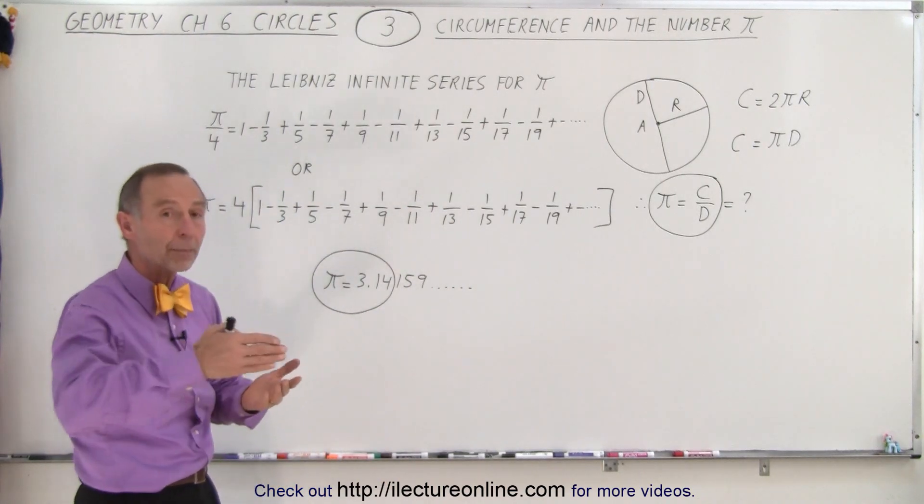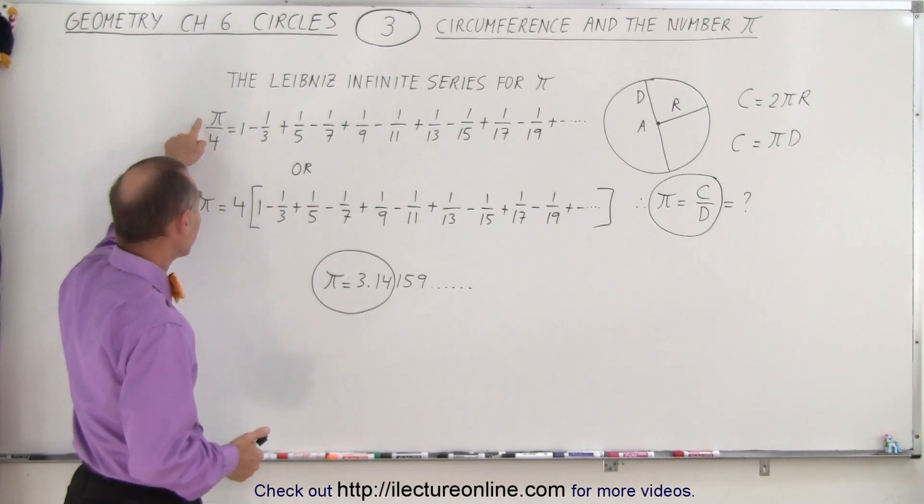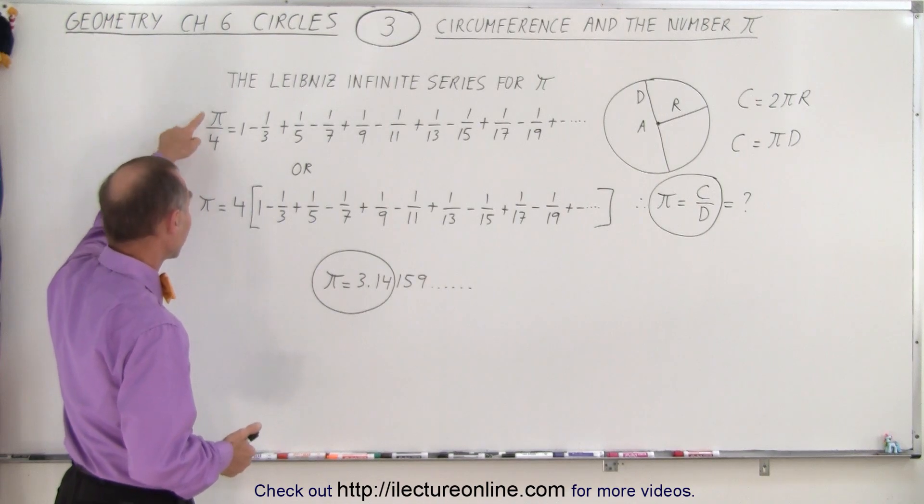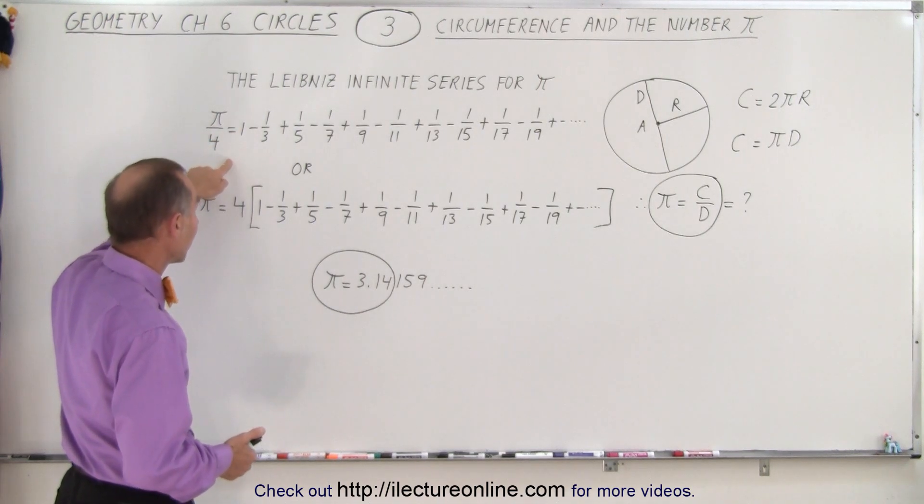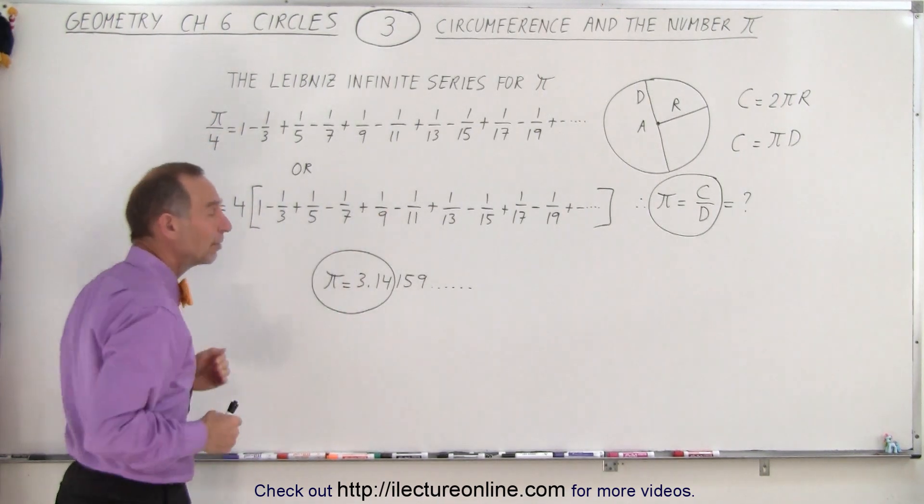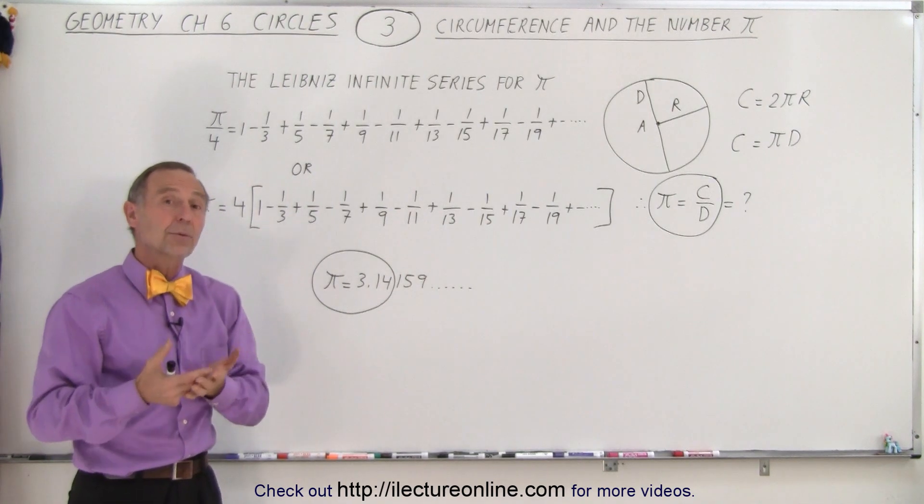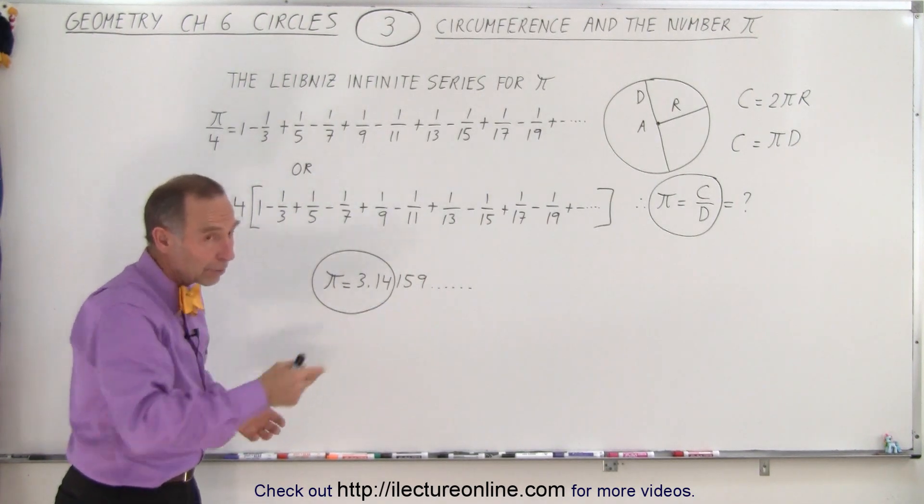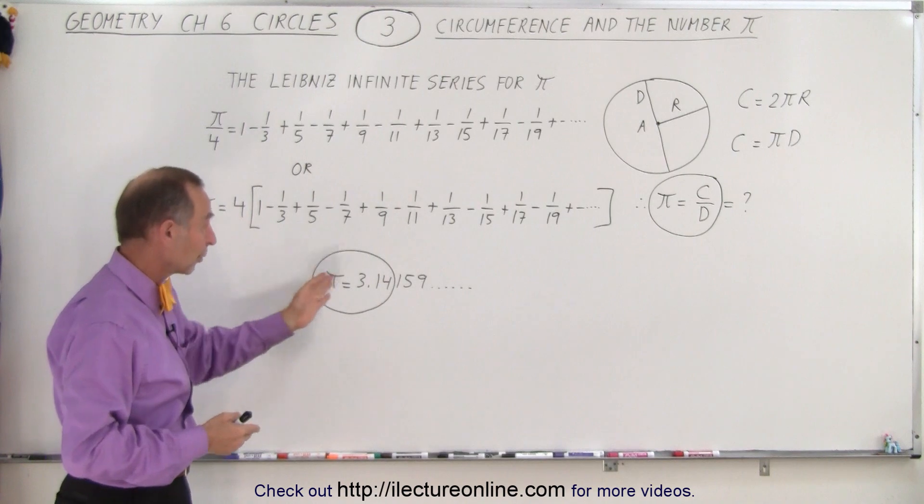Of course, if you do that for a very long period of time, the number you end up with—then you have to multiply all that by 4—you'll get a fairly accurate result for π. And the farther you go out, the more decimal places you will get.